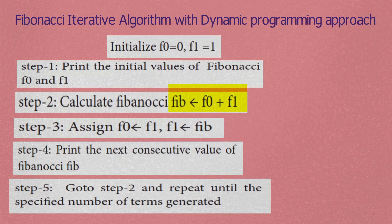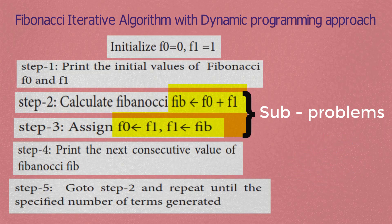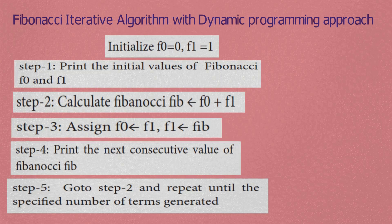The Fibonacci formula is Fib equals F0 plus F1. If you have any values, you can exchange F1. This creates the subproblems. This is the dynamic programming approach — this is how dynamic programming works. Let's see another video. Thank you.